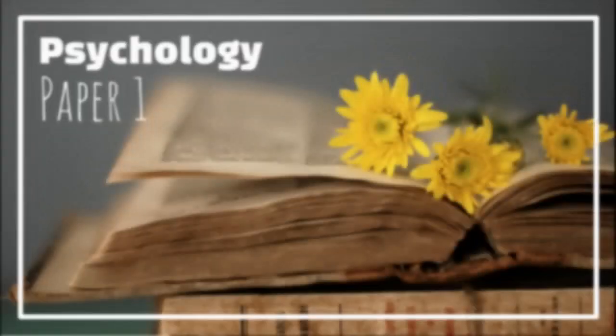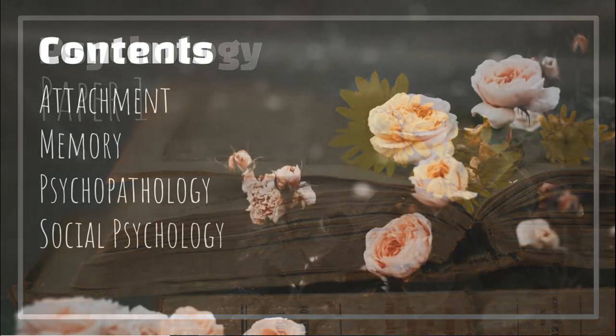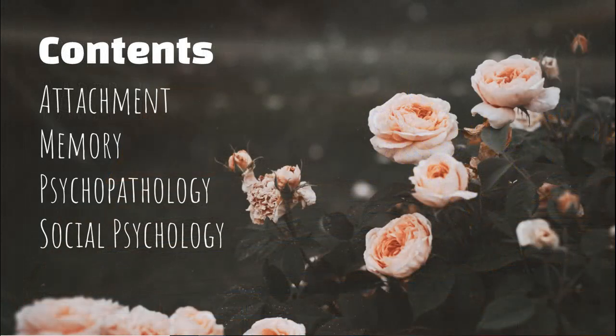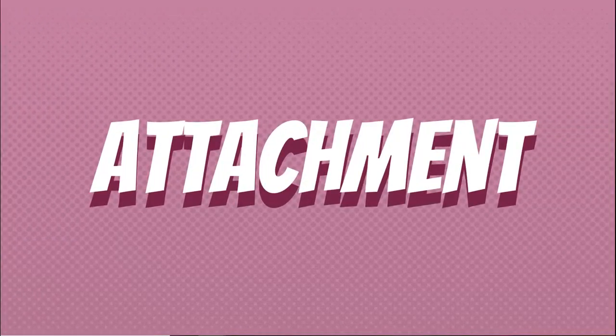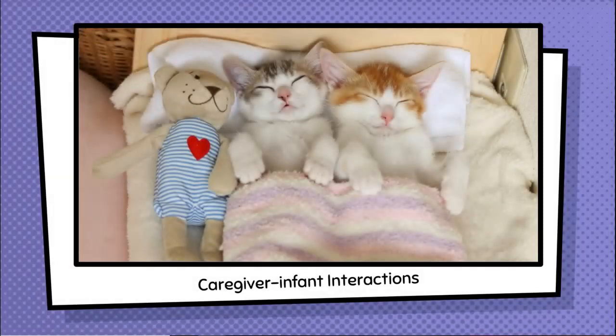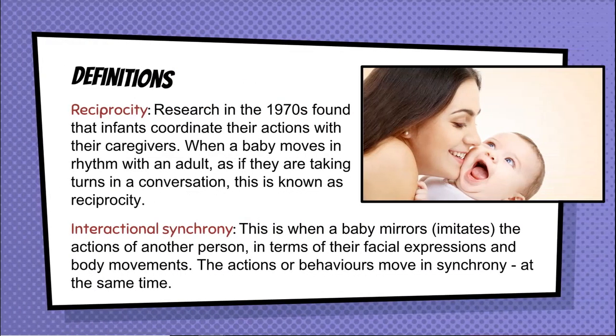Hello and welcome, you are watching Freeology Revision. In today's video we are looking at a QA Psychology Paper 1, Topic 1: Attachment. In this video we are talking about caregiver-infant interactions. There are two key terms you need to know about for this topic: reciprocity and interactional synchrony.